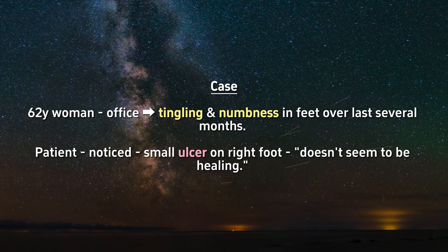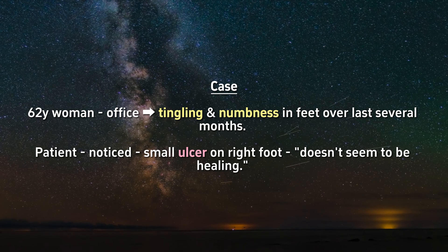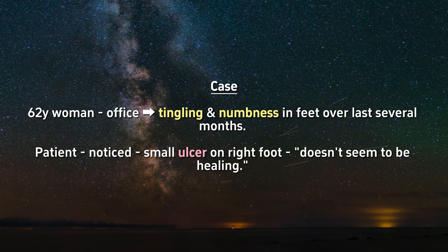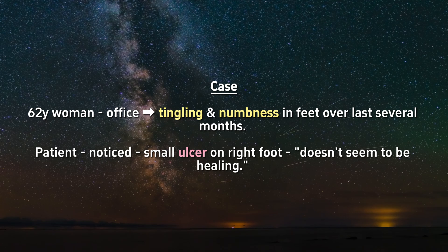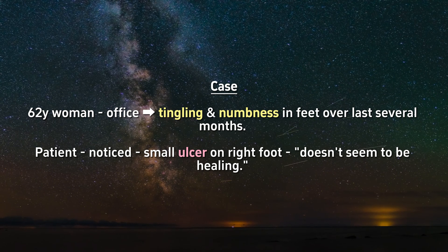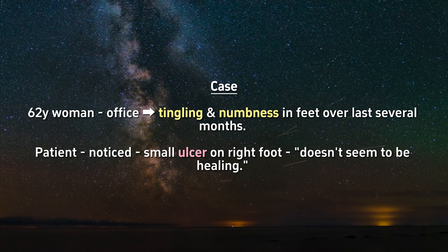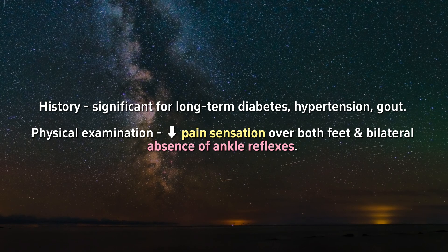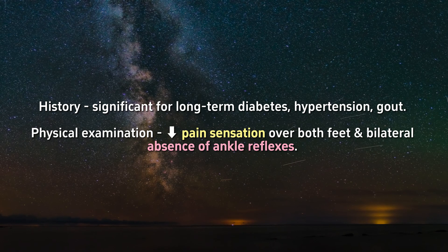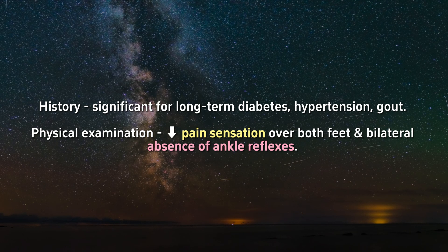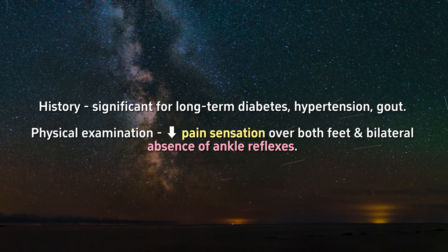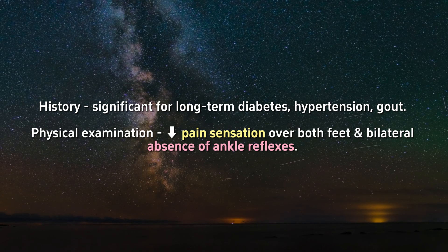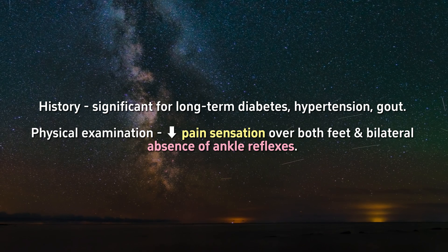A 62-year-old woman comes to the office due to tingling and numbness in her feet over the last several months. She has also noticed a small ulcer on her right foot that doesn't seem to be healing. Medical history is significant for long-term diabetes, hypertension, and gout. Physical examination shows decreased pain sensation over both feet and bilateral absence of ankle reflexes.